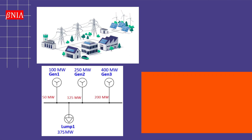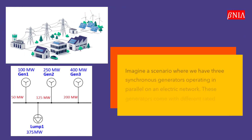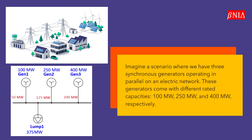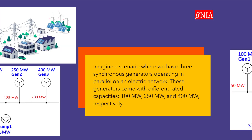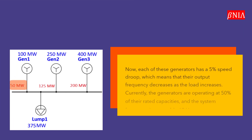Imagine a scenario where we have three synchronous generators operating in parallel on an electric network. These generators come with different rated capacities: 100 megawatts, 250 megawatts, and 400 megawatts respectively.